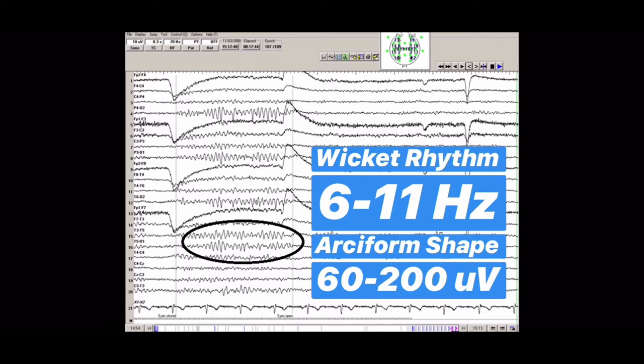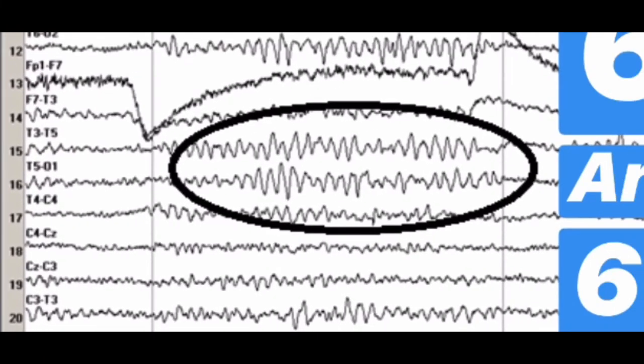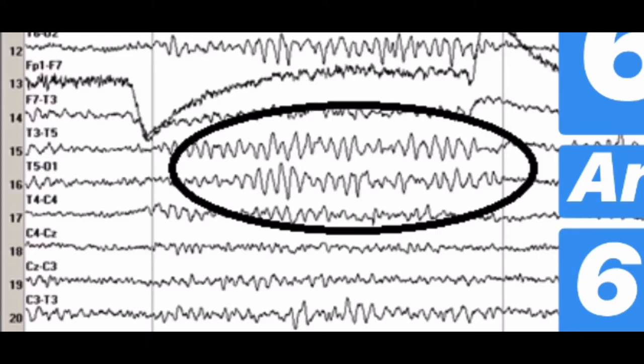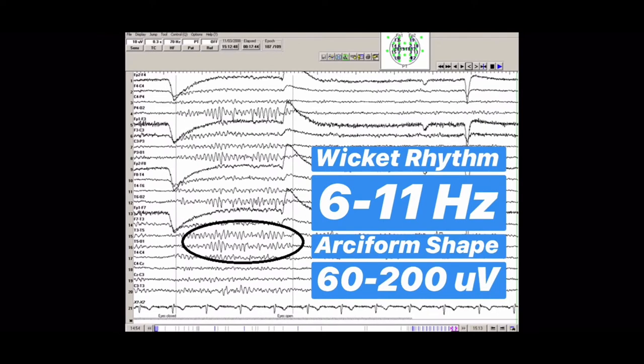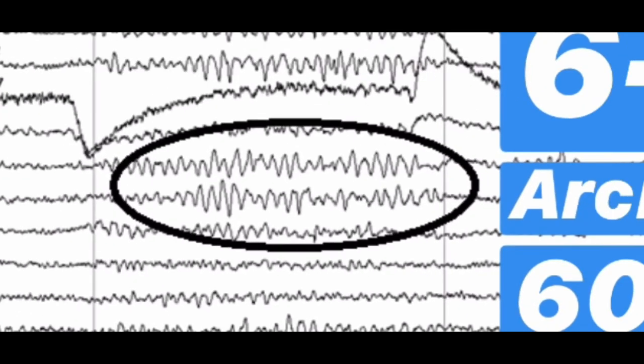Now let's look at some actual EEG patterns of wicket rhythm. Here's a good example from eegpedia.org. You can see it has a nice arciform shape just like mu rhythm, and it's coming most prominently from the T3 to T5 electrode, in the temporal regions. The frequency is between 6 and 11 waveforms per second with 60 to 200 microvolt amplitude — the shape is clearly arciform.